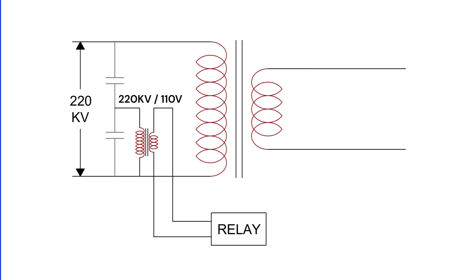For example, let's say a transformer's primary is connected to a 220 kV supply at 50 hertz. The PT ratio is 220 kV by 110 volts. So, the V/F ratio is 110 by 50, which is 2.2. At this ratio, the transformer operates safely. But what happens if the V/F ratio exceeds this value? That's where overfluxing occurs.